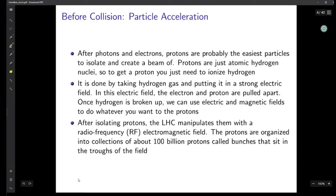Protons are probably the easiest particles to isolate and create a beam of. Protons are just atomic hydrogen nuclei. To get a proton, you just need to ionize hydrogen, which means ripping the electron apart from its orbit — you'll get a proton. This is done by taking hydrogen gas and putting it in a strong electric field. In this electric field, the electron and proton are pulled apart. Once hydrogen is broken up, we can use electric and magnetic fields to do whatever we want with the protons.